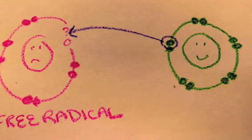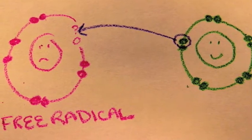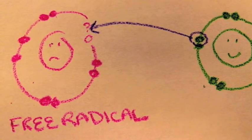To gain stability, it takes an electron from a nearby molecule. This can happen in any part of the cellular structure, for example, in the cell membrane or within DNA.